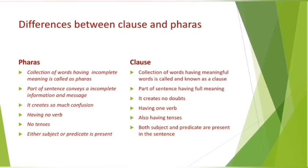A clause has a verb with tenses. Another key point: in a phrase, either the subject or the predicate is present, but not both. In a clause, both the subject and the predicate are present in the sentence. So if a part of a sentence has only one — either subject or predicate — it is a phrase. If it has both subject and predicate, it is a clause.